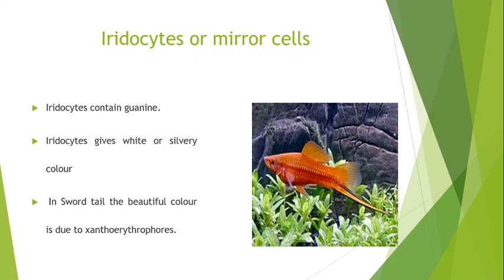So there are three things to keep in mind for coloration: first is the number of chromatophores, then the second is the type of pigment present in them, and the third is the manner of distribution — how they are distributed in the body.